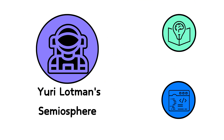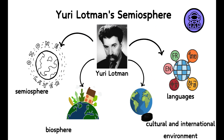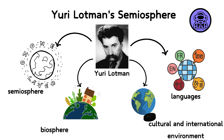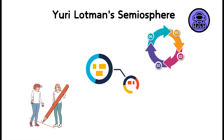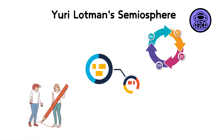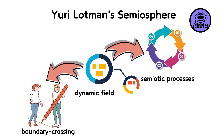Yuri Lotman's Semiosphere. Yuri Lotman, a Russian semiotician, introduced the concept of the semiosphere, which he described as the semiotic space necessary for the existence and functioning of languages and other sign systems. Similar to the way the biosphere is essential for biological processes, the semiosphere encompasses the cultural and intellectual environment where all communication and meaning-making occur. Lotman's semiosphere is not just a collection of individual texts and communications but a dynamic field where various semiotic processes interact.